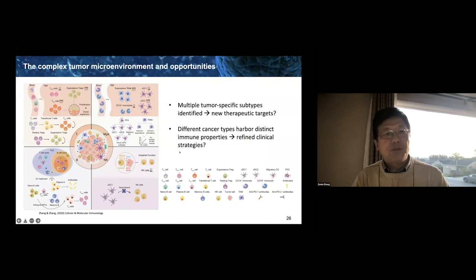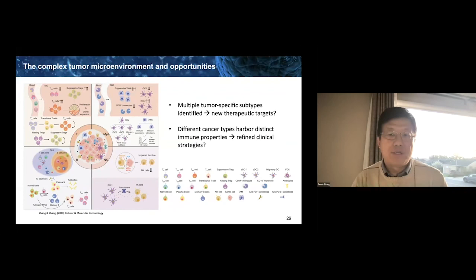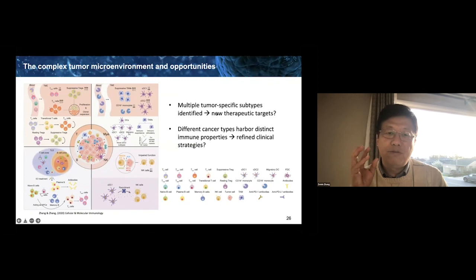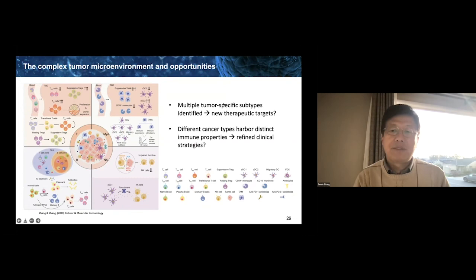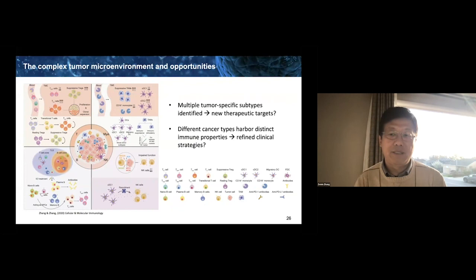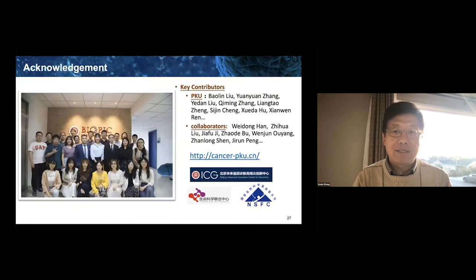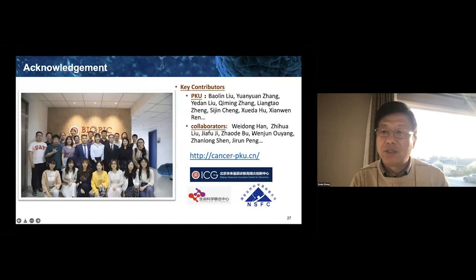To summarize, we talked about the complex tumor microenvironment and multiple tumor-specific subtypes that may provide future opportunities to find novel targets. Once you find tumor-specific cell types, you can find ways to perturb them — inhibit, eliminate, or activate. Once you develop therapeutic strategies targeting these cell types, you should factor in cross-cancer differences because different cancer types harbor distinct immune properties, requiring refined clinical strategies. I want to acknowledge multiple people involved in this work — details available on our website. Thank you.